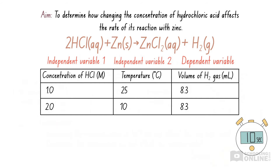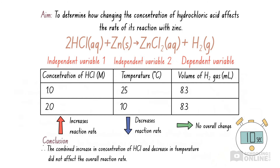In fact, it is likely that the reaction rate increased as we increased the concentration of hydrochloric acid. However, this would have been cancelled out by the lower temperature, which decreases reaction rate. The correct conclusion is that the combined increase in concentration of hydrochloric acid and decrease in temperature did not affect the overall reaction rate. This conclusion does not address the aim of the experiment. This is why we can only have one independent variable — so that any change in results can be solely attributed to changes in that single variable.